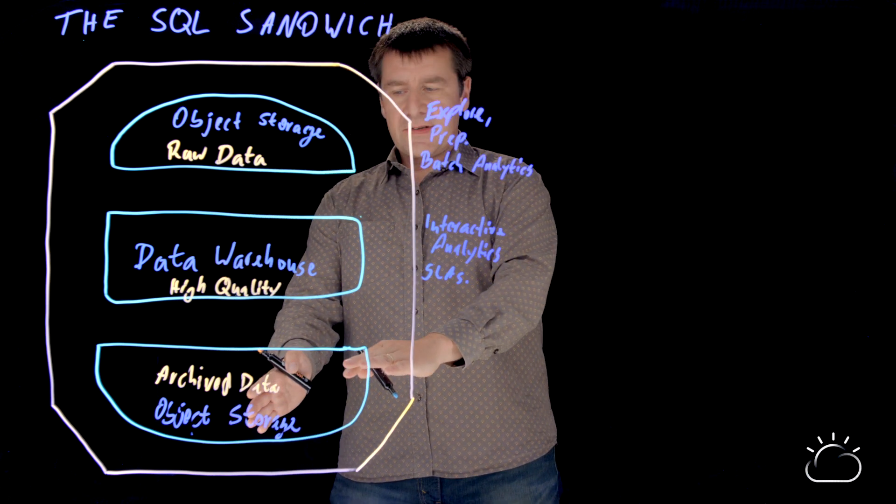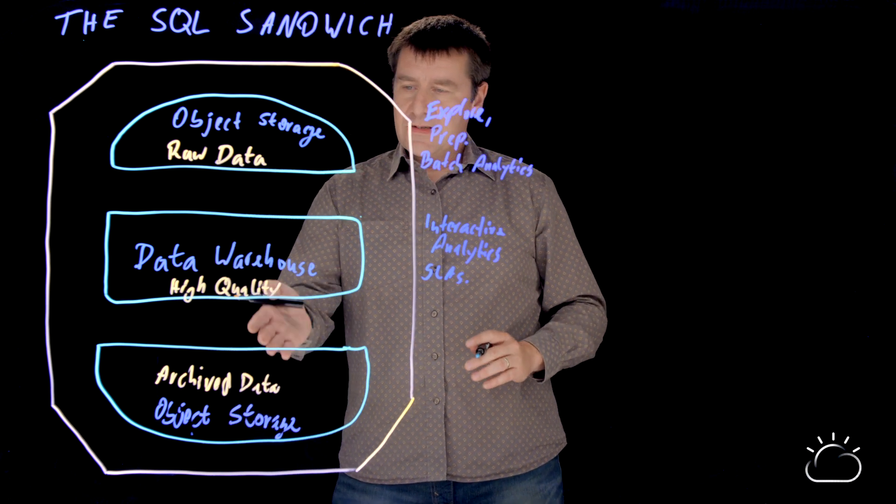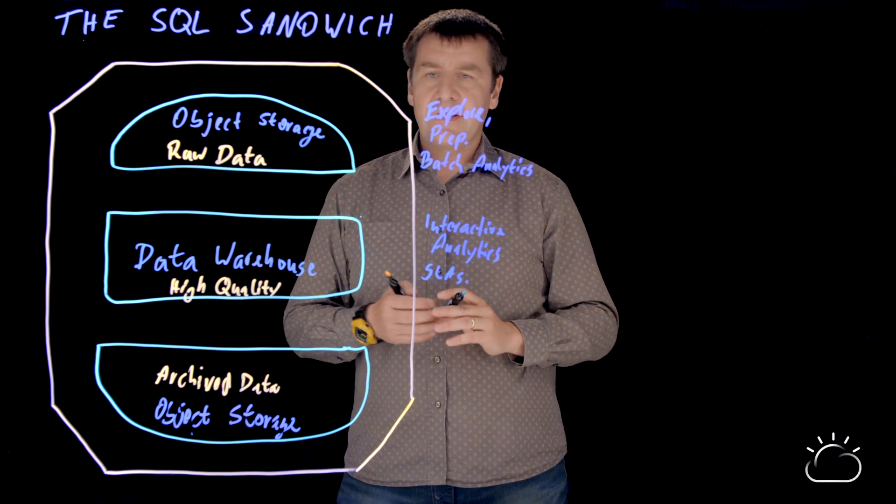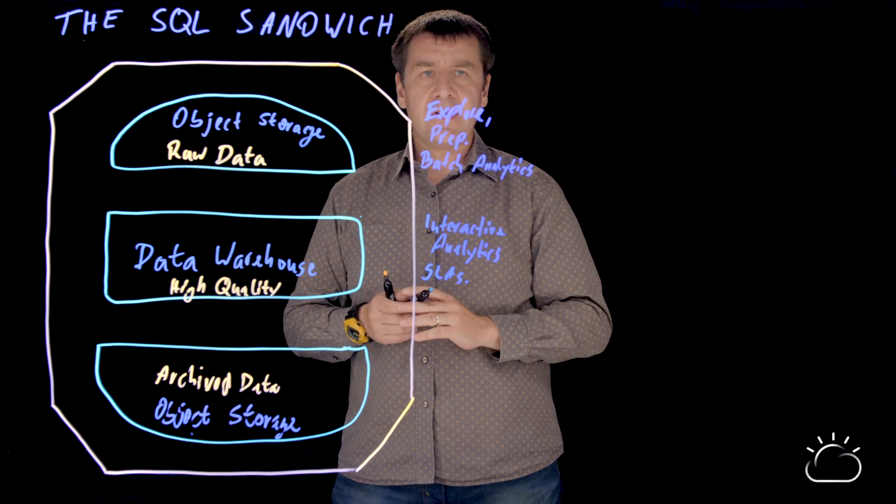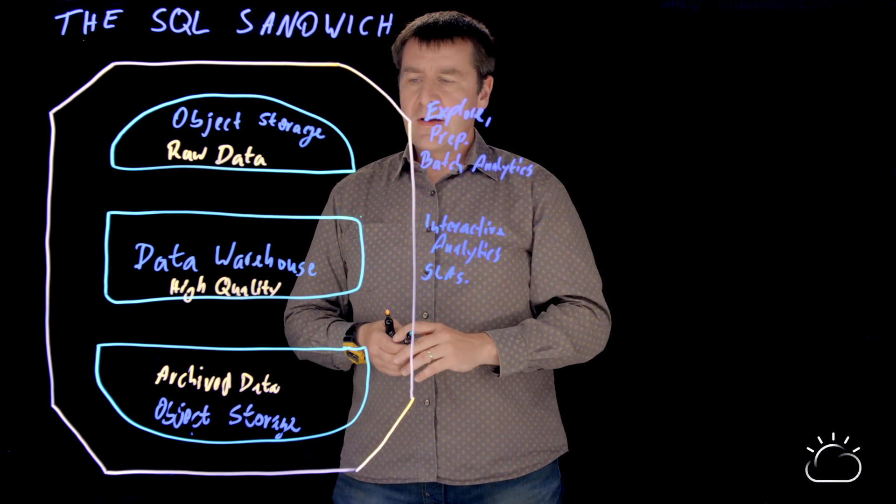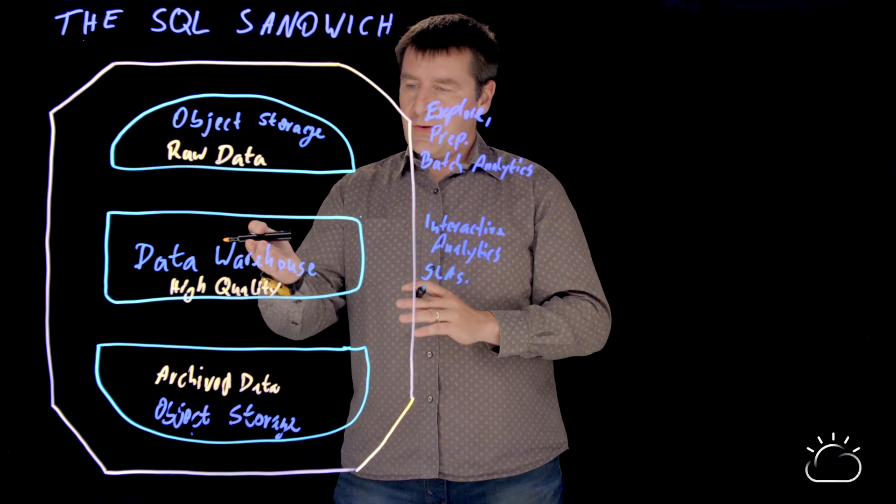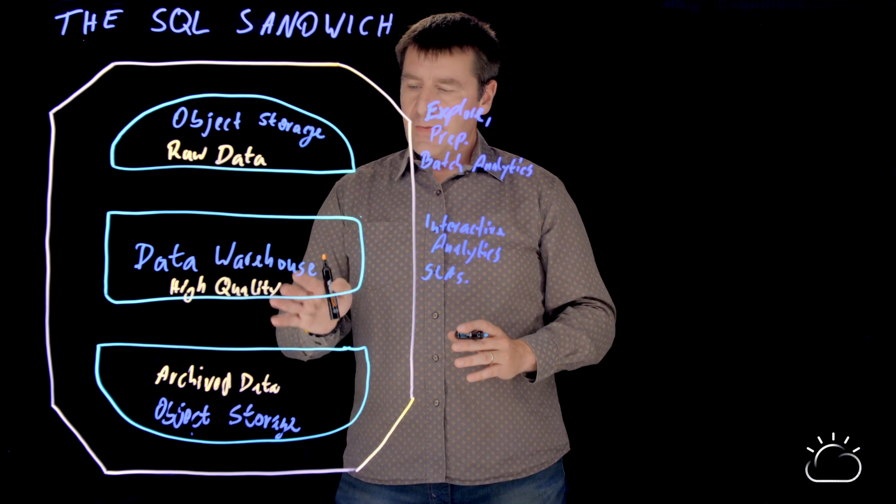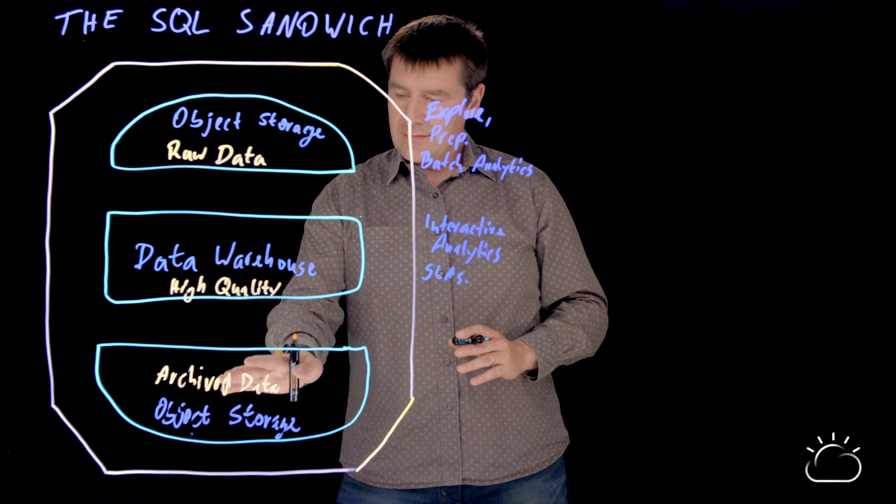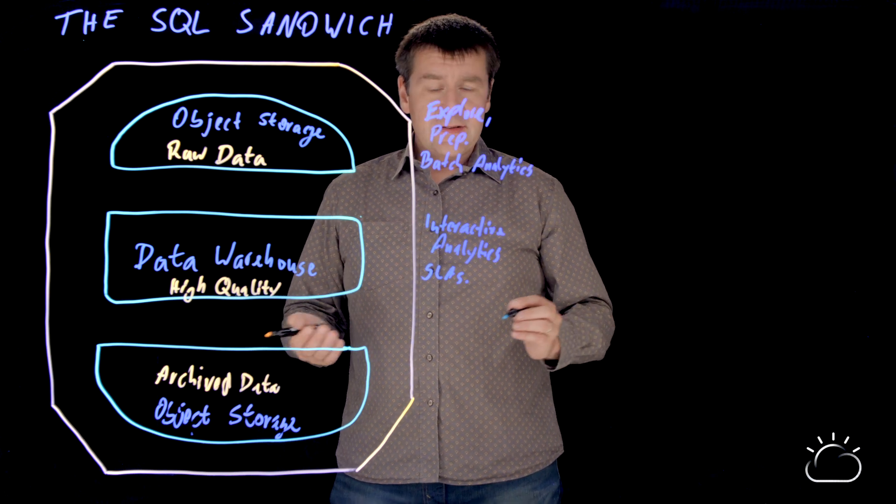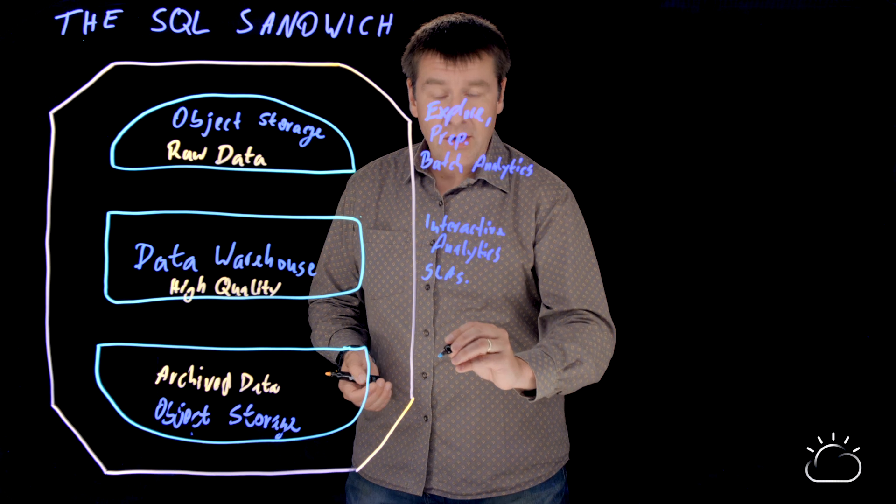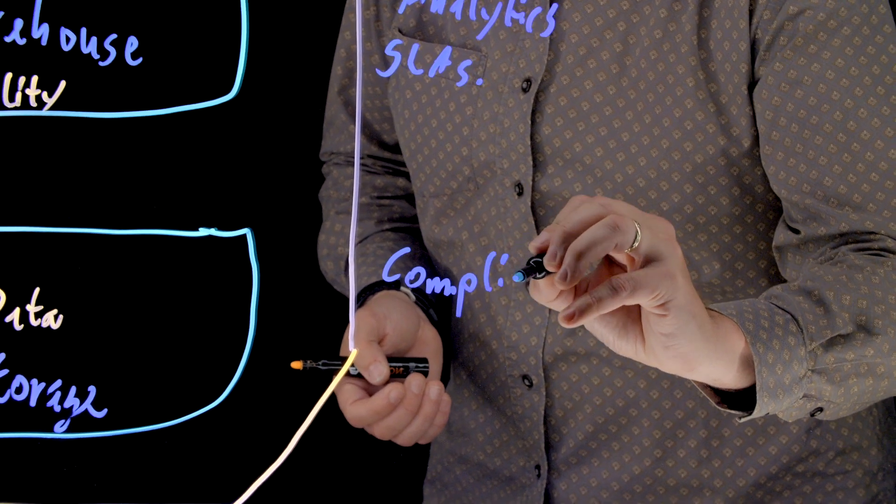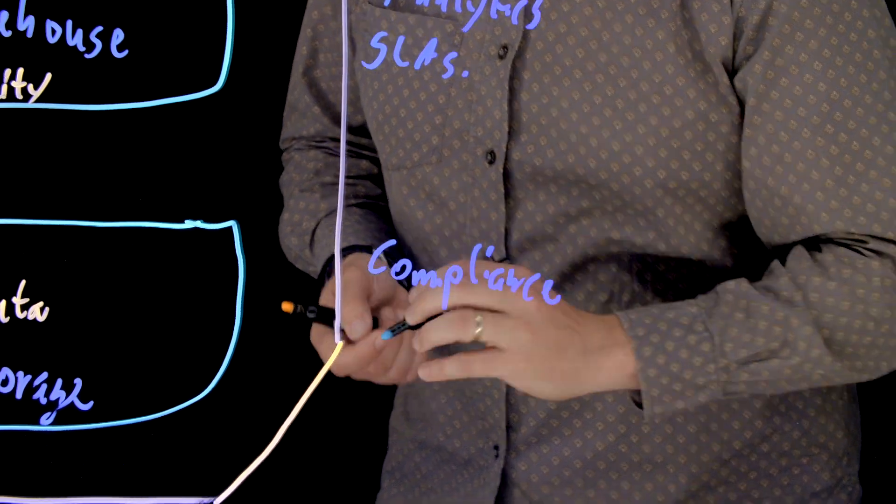And why are we having this archive data again? Well, this is because you do not want to keep all of this data for years around in a data warehouse. As I told you, this is the more expensive thing to run of all of these components. So it makes sense for data that is not hot anymore, that is not required for your daily business, to archive it again into an object storage. So that, for instance, you can still run things like compliance reports that you are required to do to be compliant with certain regulations.